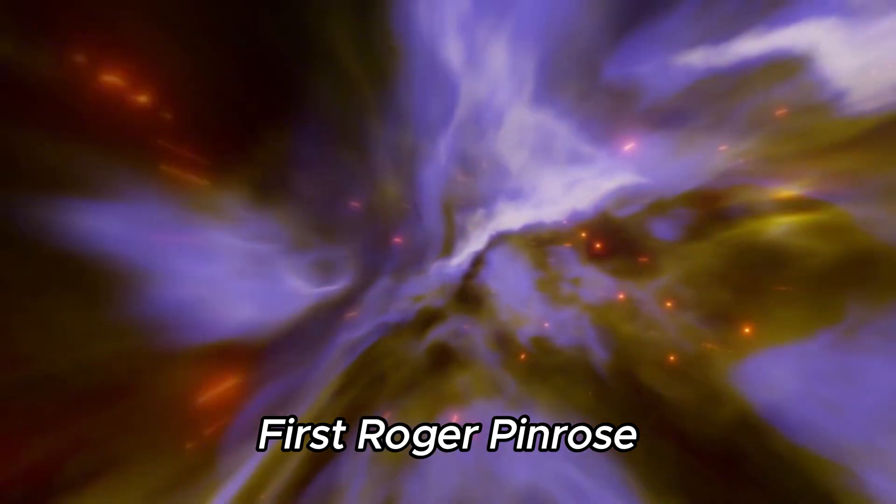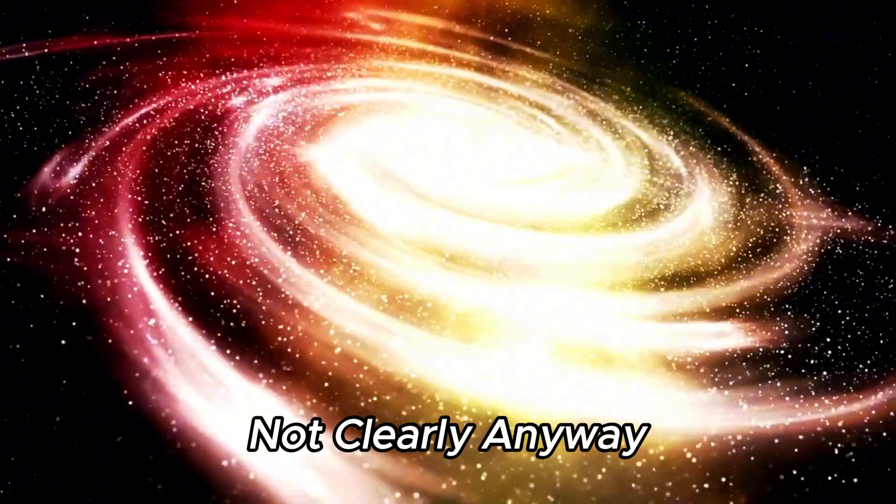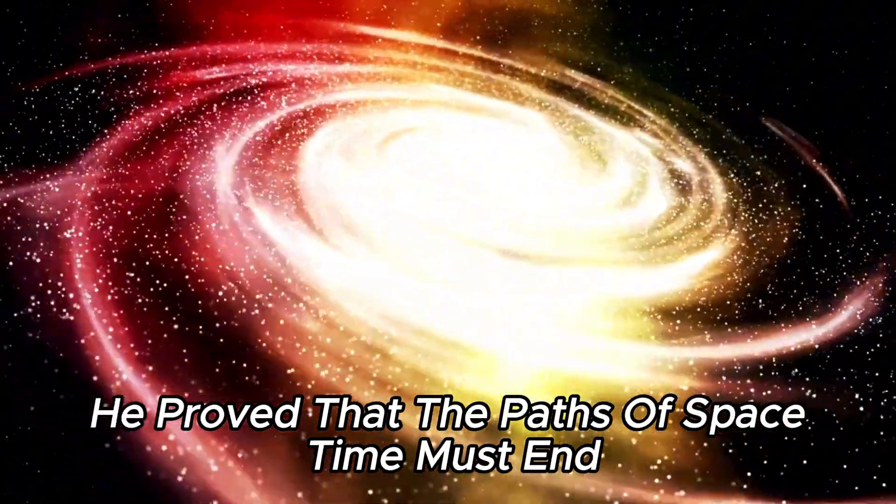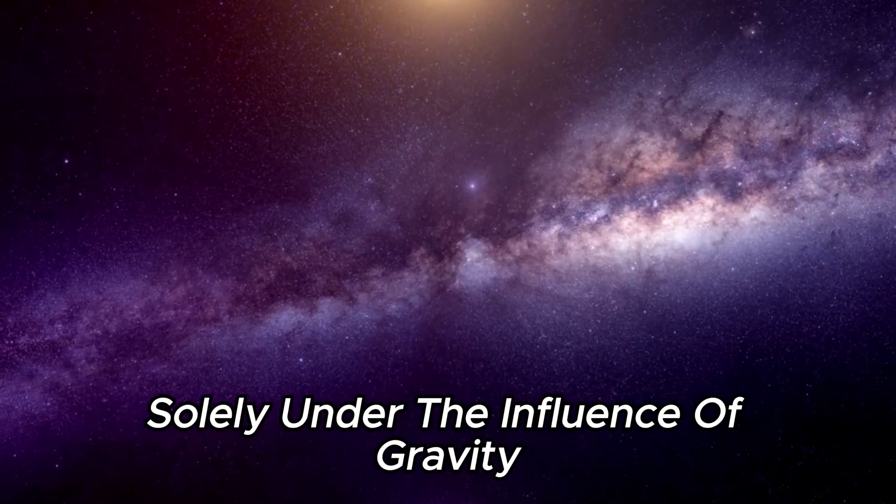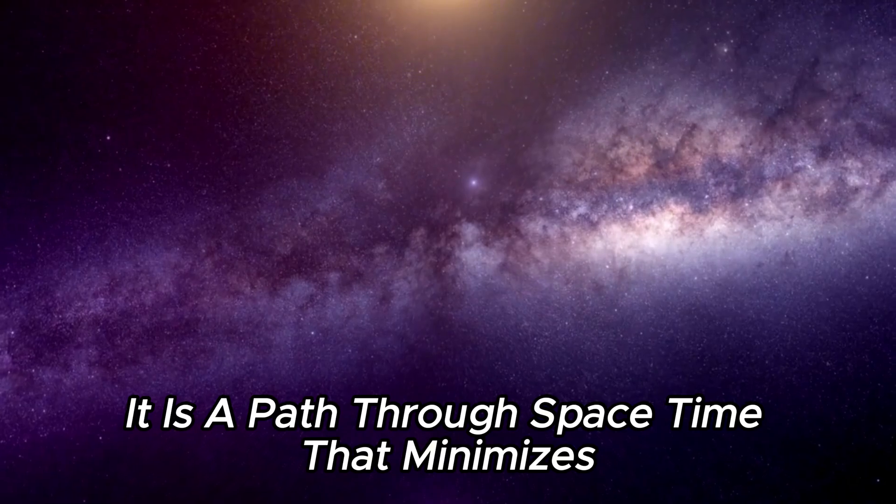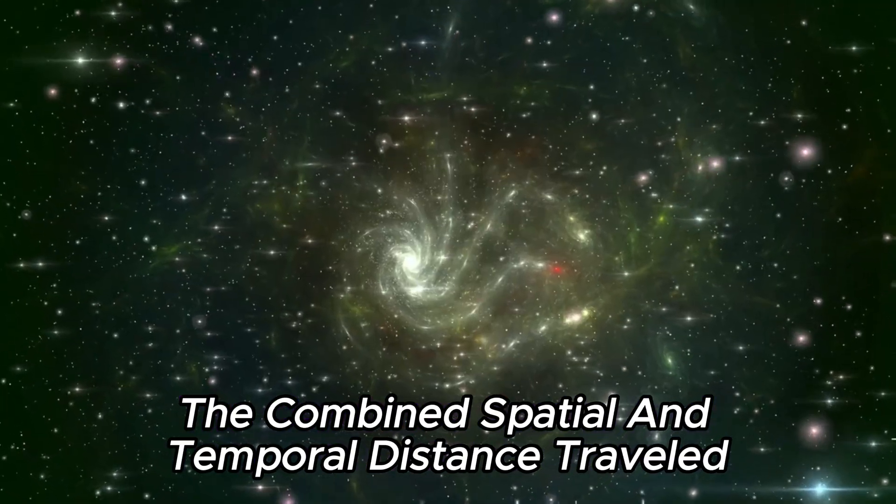First, Roger Penrose did not exactly prove the existence of singularities. Not clearly, anyway. He proved that the paths of space-time must end inside a black hole. Anything that moves through space-time solely under the influence of gravity obeys what is called a geodesic. It is a path through space-time that minimizes the combined spatial and temporal distance traveled.